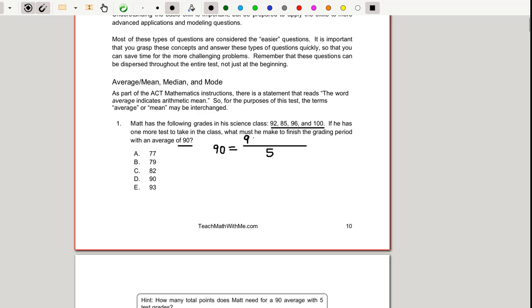We know we already have a 92, an 85, a 96, 100, and then we have this unknown fifth score and that's what we're looking for. Now we could add up all these numbers and when we add up the four known values we have now that 90 is going to be equal to 373 plus X, that unknown, divided by five.